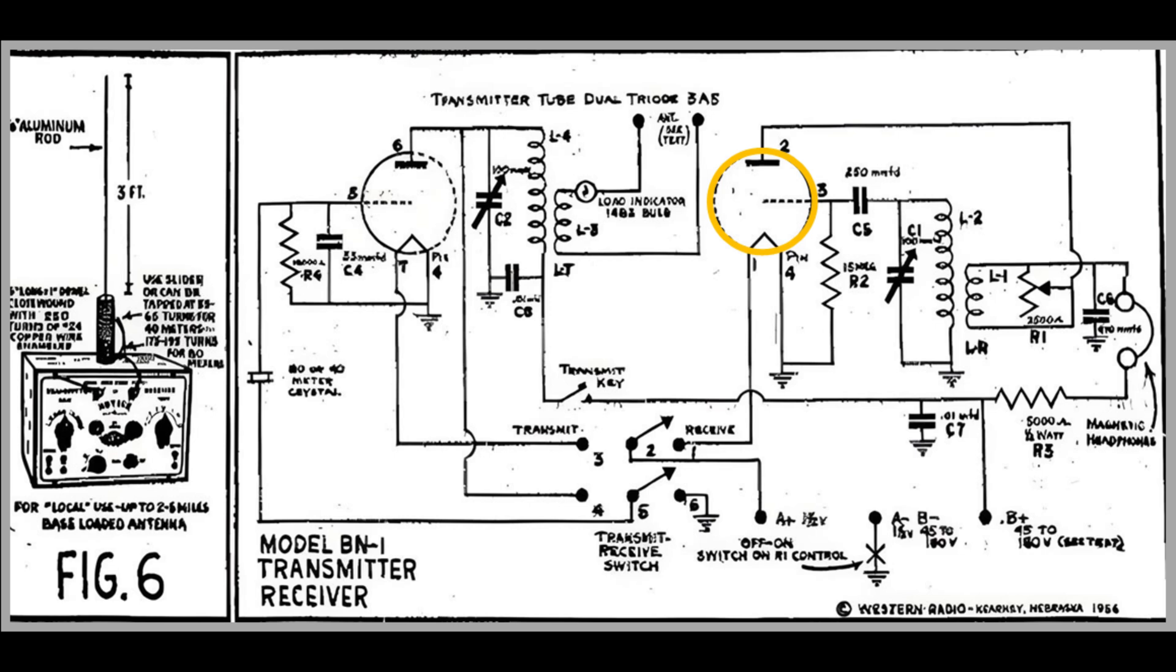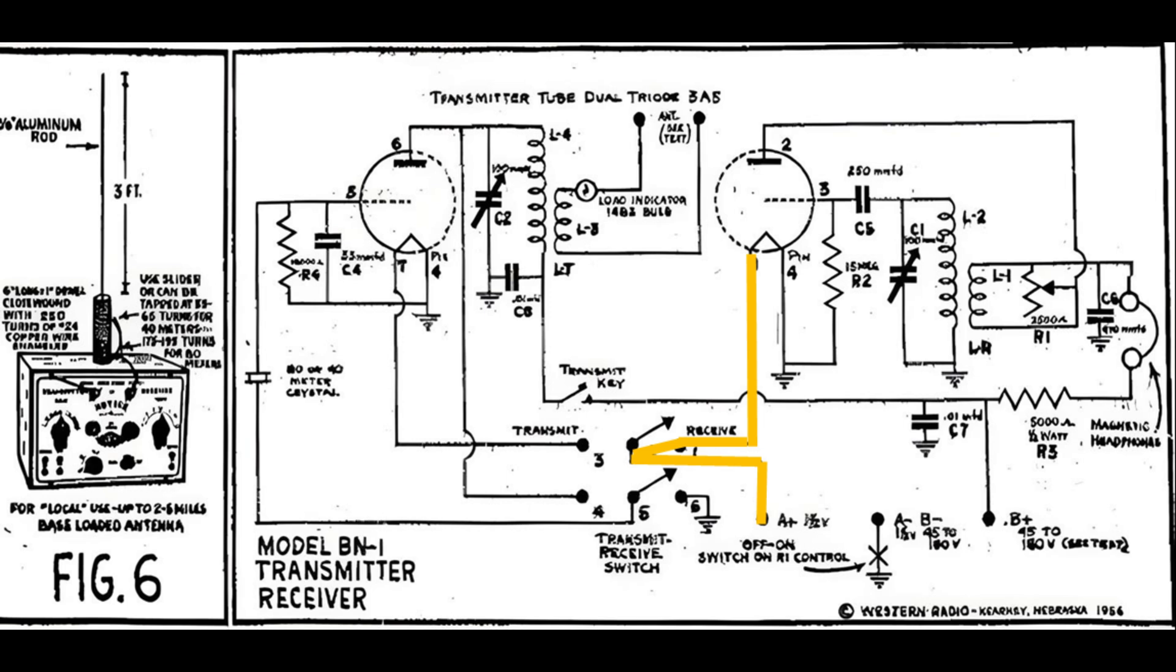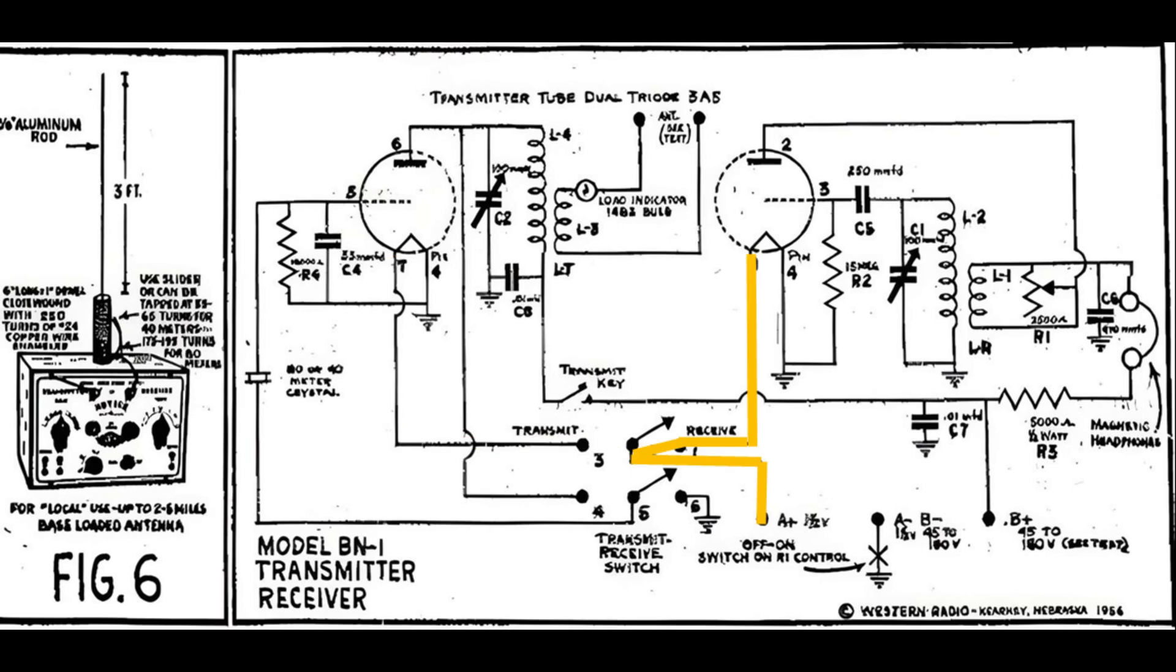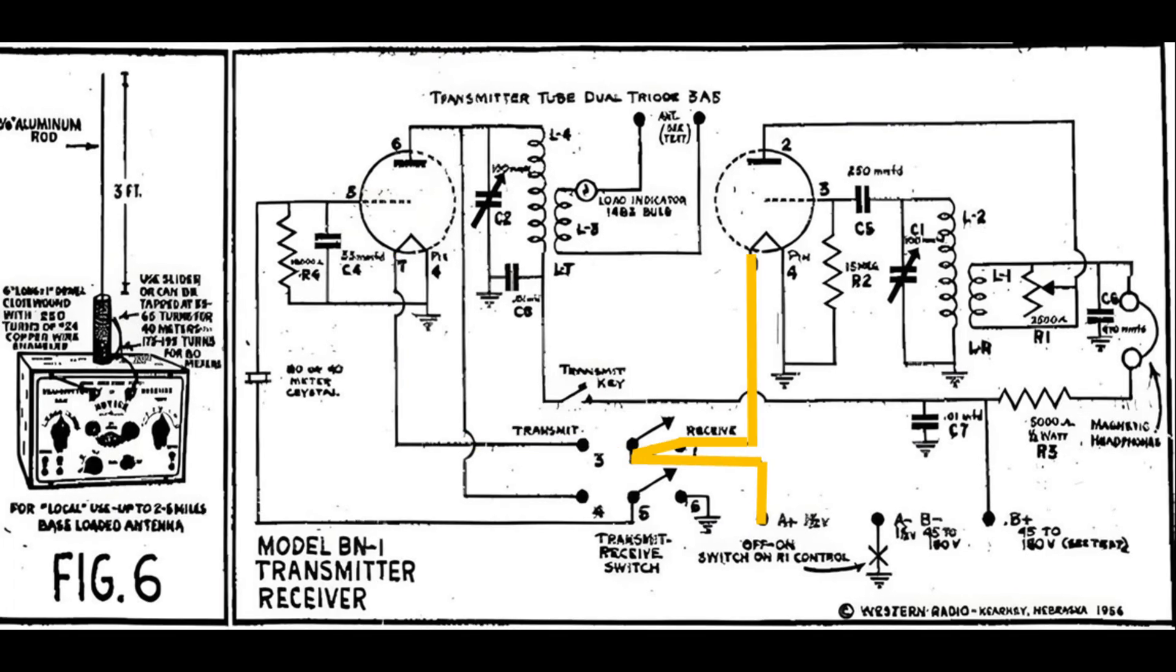And the really goofy part is that the transmit receive switch turns power on to one half of the filament to run the transmitter when you're in transmitting mode. Then you switch to receive and you turn that off, and now you're turning on the receiver tube and putting power on that side of the tube to run that filament. So as you're going from transmit to receive with the switch, you're actually turning off the transmitter, and then you're turning on the receiver to receive, and then you turn the receiver off, and you go back to the transmitter.